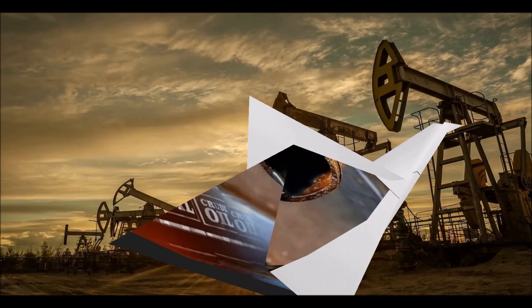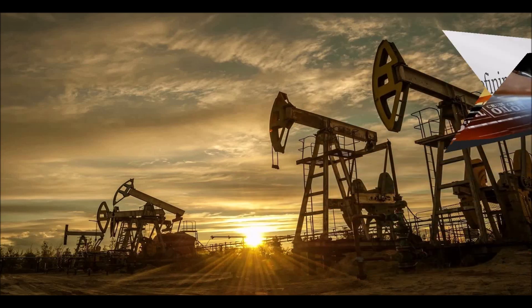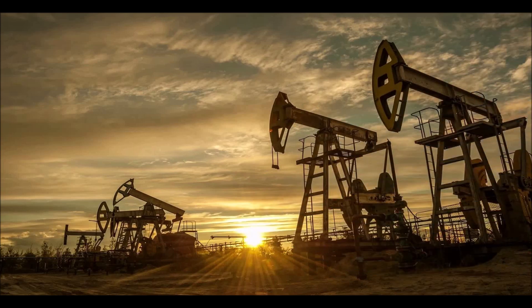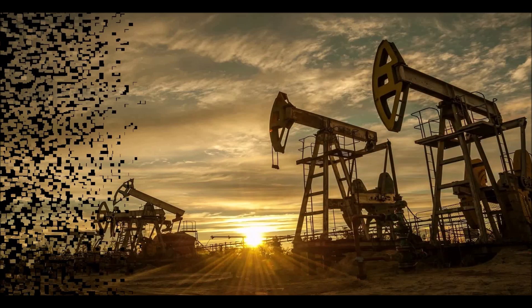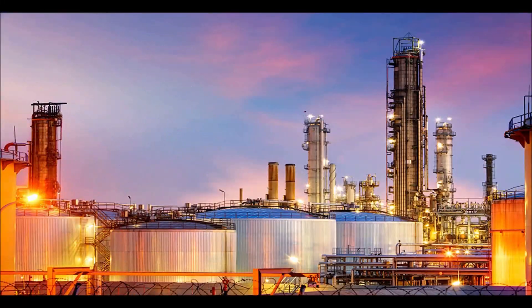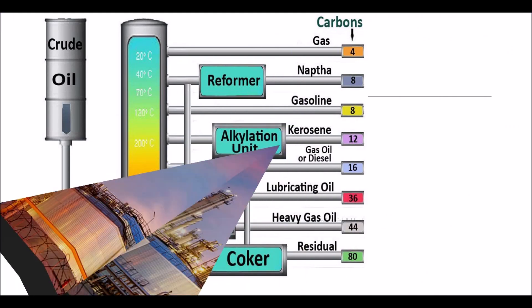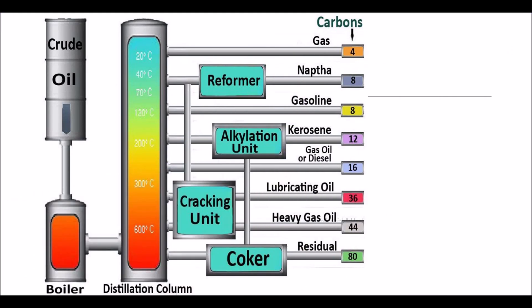Through the oil refining process, oil is first extracted from the earth using oil extraction machines. Governments purchase the oil and send it to a facility called a refinery.